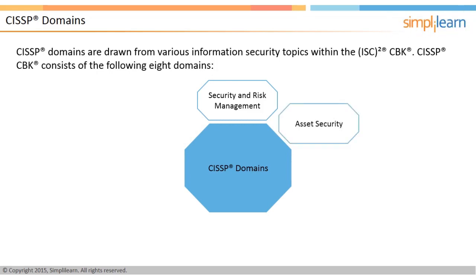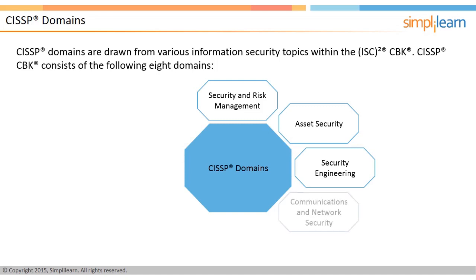Domain 2: Asset Security. This domain includes collection, handling, and protection of information throughout its lifecycle. Topics covered include information classification, ownership, privacy protection, asset retention and handling, and security controls. Domain 3: Security Engineering. This domain discusses the concepts of secure design principles, security models, evaluation models, security architecture, cryptography, and physical security.